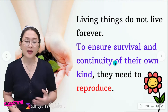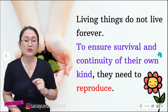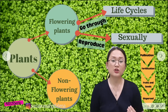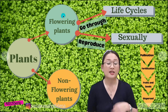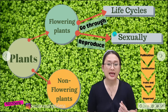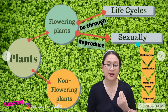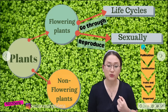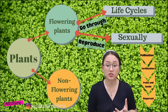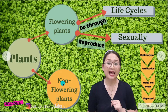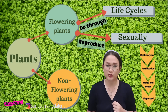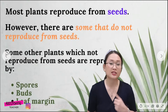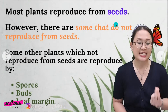Now we are going to talk about plants. Plants consist of two kinds. The first one is flowering plants, which means the plant produces flowers, and from the flowers it will produce seeds. Flowering plants go through a life cycle and reproduce successfully, starting from pollination until dispersal. In contrast, non-flowering plants do not produce seeds — they don't have flowers and don't produce seeds.